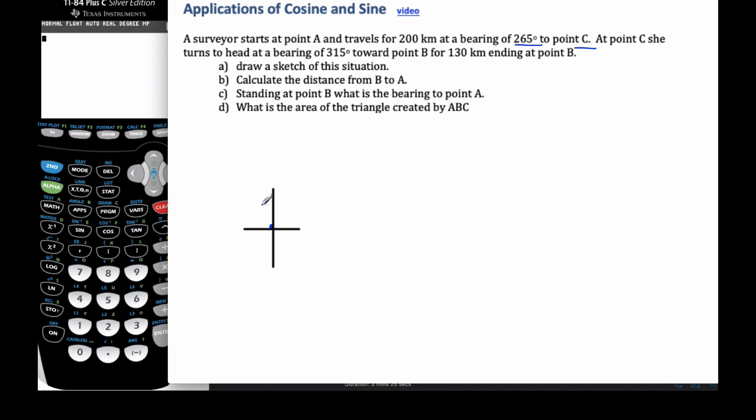And if this is point A, 265. I know, well, here's north. I go from here. So I go around. Here is 270. I'm just shy of 270. So I'm going to go in this direction for 200 kilometers. And so it looks like I need to take my information and slide it over here a little bit.